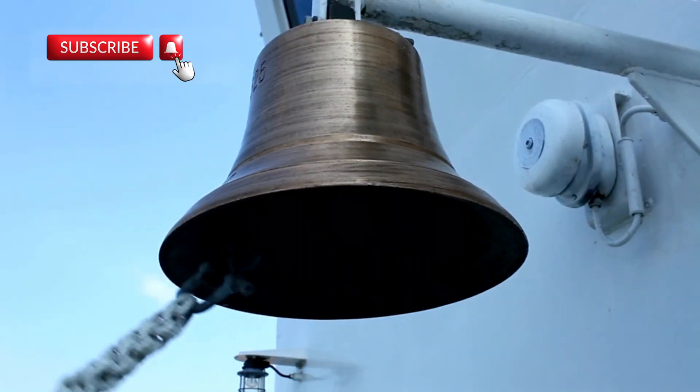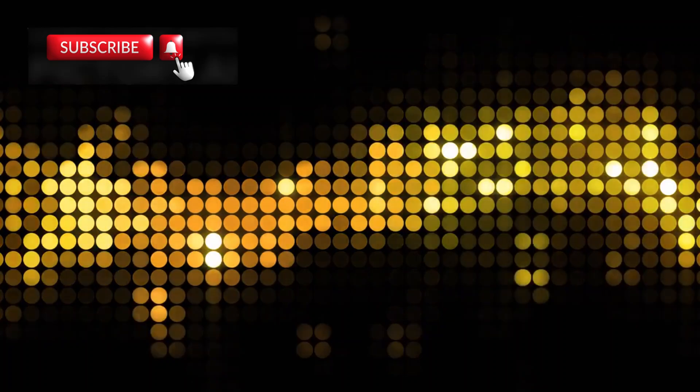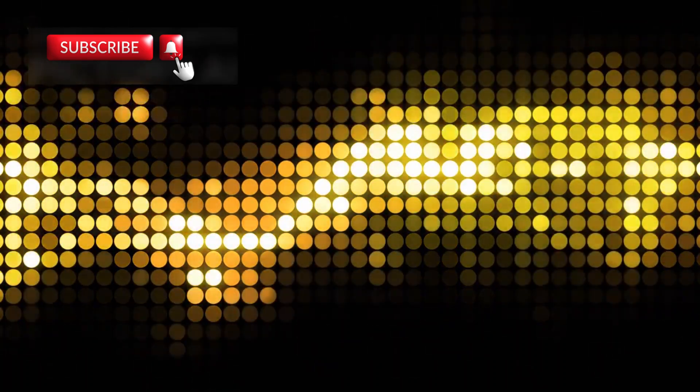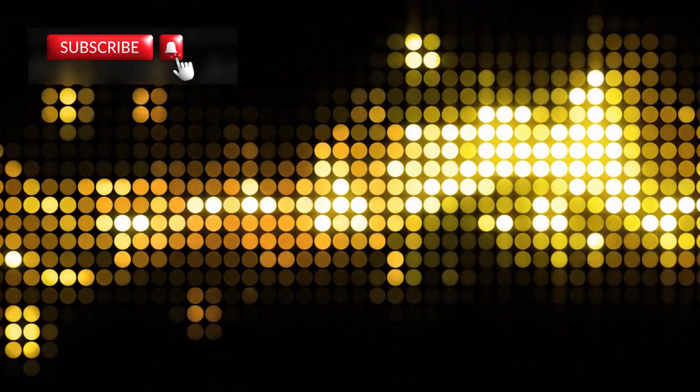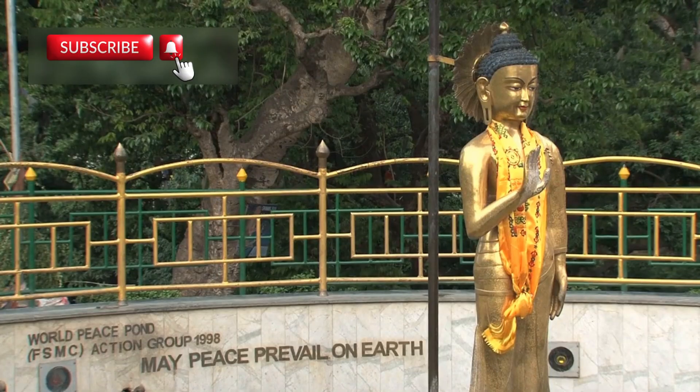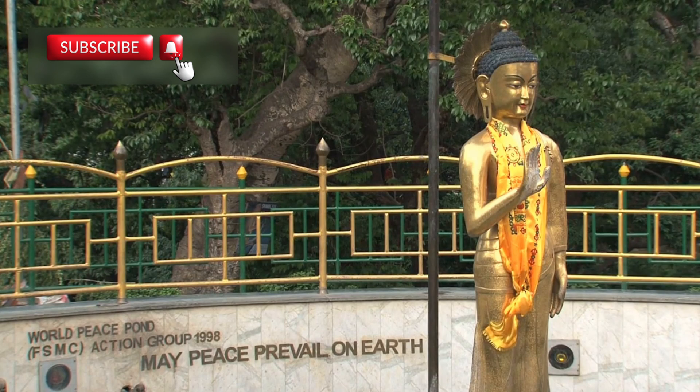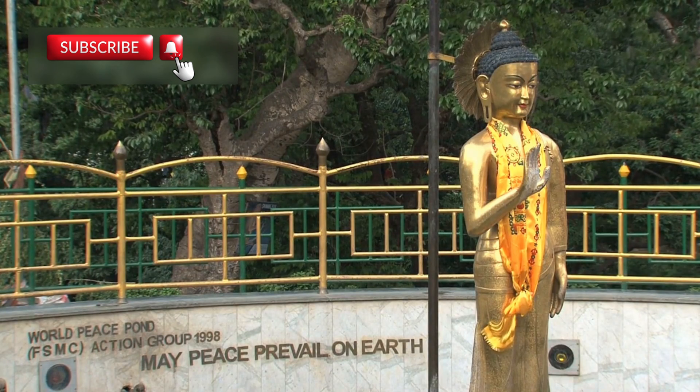Voyager 1 also carries the famous golden record, a shiny disc filled with greetings, music, and sounds from Earth. The record includes 55 spoken languages, natural sounds like thunderstorms and ocean waves, and even music from Beethoven. It serves as a message to other life forms, showing what life is like on Earth and offering a glimpse into our planet's cultural richness.